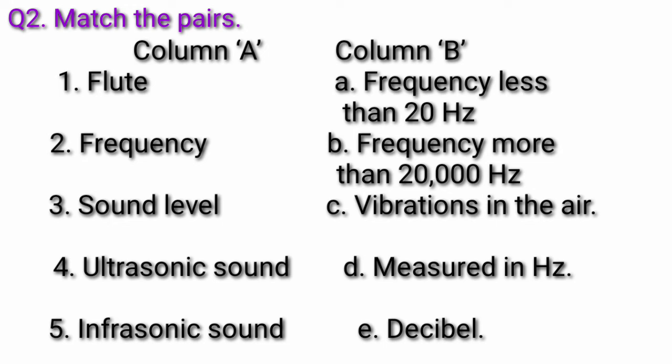Column B: A - Frequency less than 20 Hz. B - Frequency more than 20,000 Hz. C - Vibrations in the air.